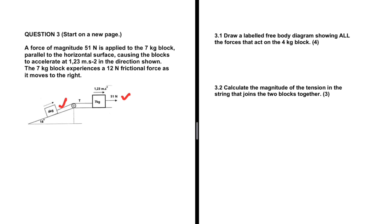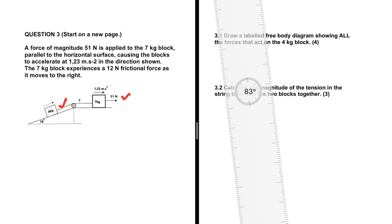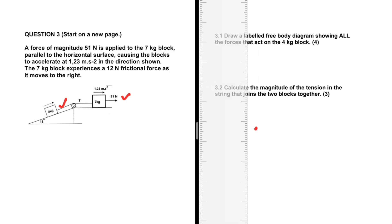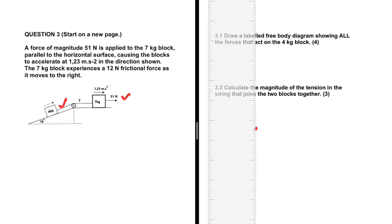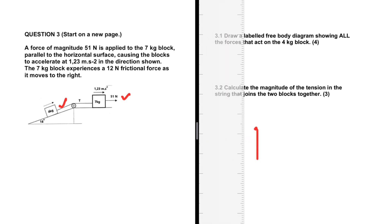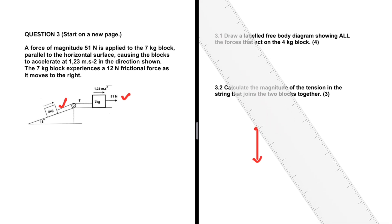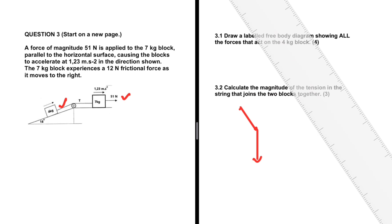Here's the 4 kg block on the incline. Let's draw a free body diagram for that 4 kg block in the space provided for 3.2. First things first, we need the weight. Our object is resting on a surface, so there's a normal force that the surface is going to exert on the object perpendicular to the surface. So we have our normal force.